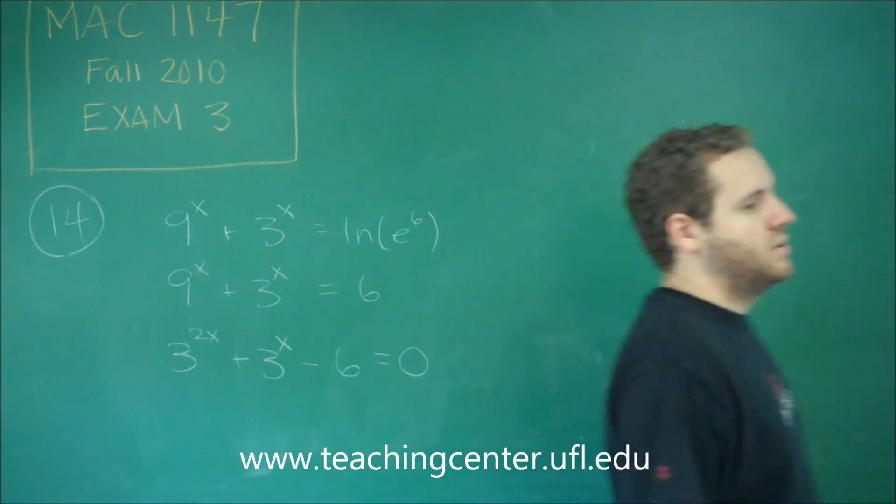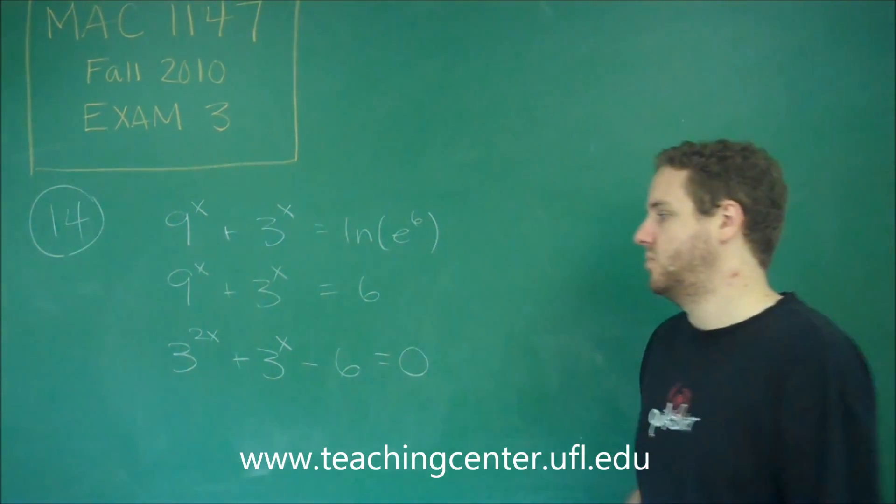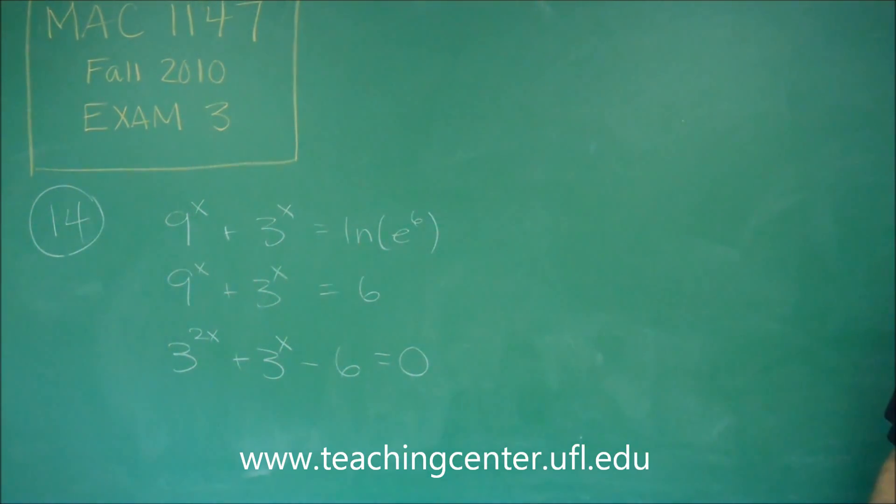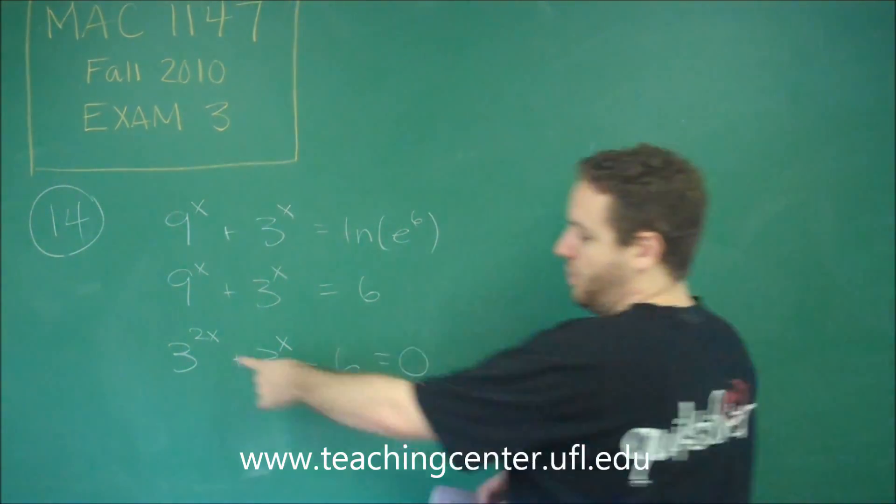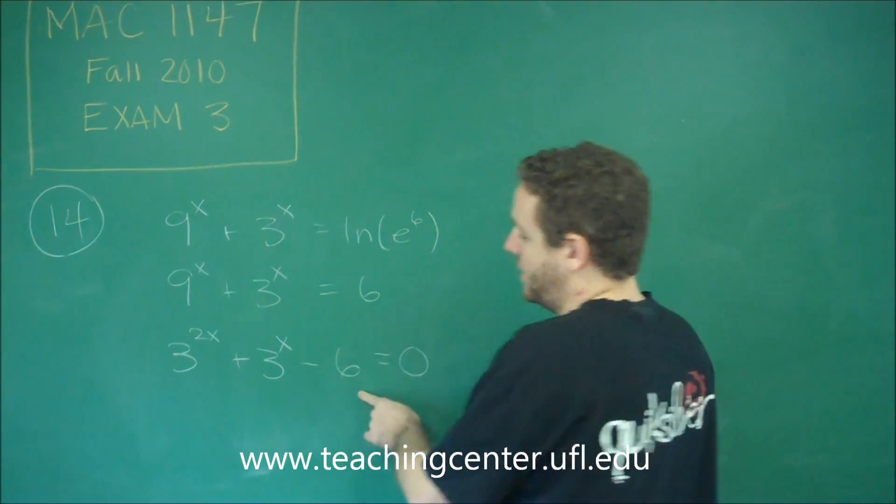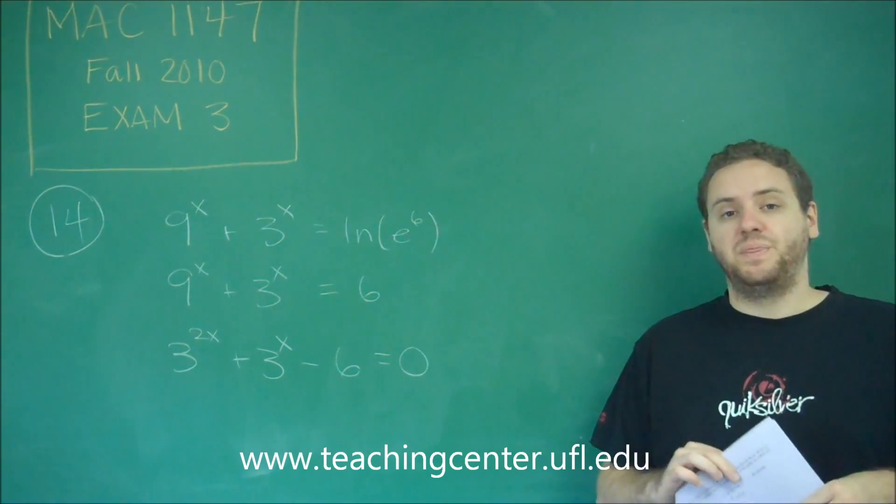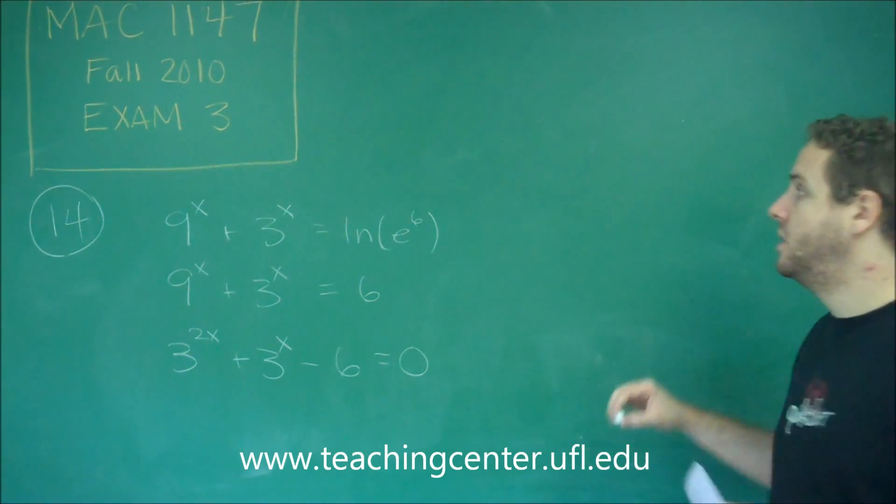So now this is going to draw in a little bit of critical thinking here. What does this equation look like? This looks like a quadratic because we have a double power, a single power, and a constant. So if you remember how to do quadratics using substitution, that's the form of this equation.